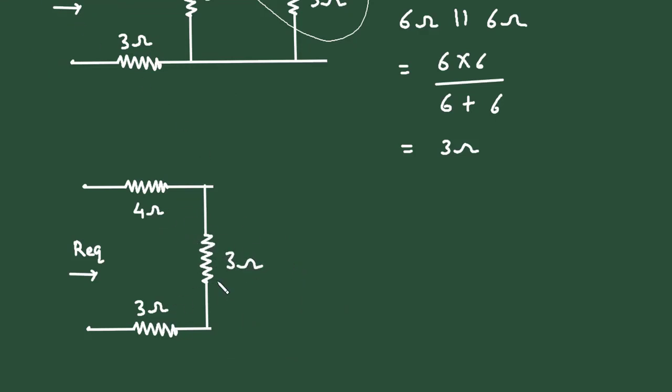Now this 4 ohm, 3 ohm, and 3 ohm are connected in series. So therefore, Req equals 4 plus 3 plus 3. So 4 plus 3 plus 3 is 10 ohm.